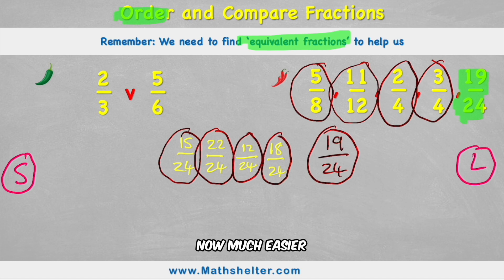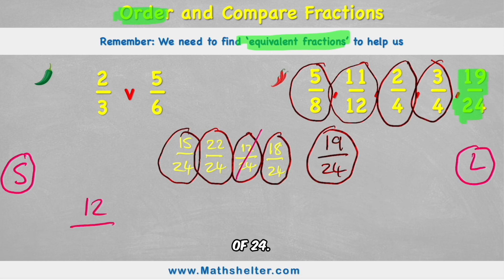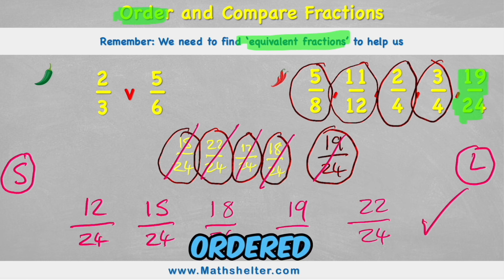And this is now much easier because they all share the same denominator. So we wanted to go from smallest to largest. So which one has the smallest value? Well, I can see my 12 24ths only has 12 parts of 24. That's going to be my smallest. My next smallest would be 15 24ths. After that, 18 24ths. After that, 19 24ths. And finally, my largest value is 22 24ths. Awesome. Give myself a massive tick. We have just ordered these fractions. So what do we need to remember?